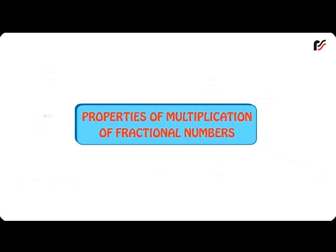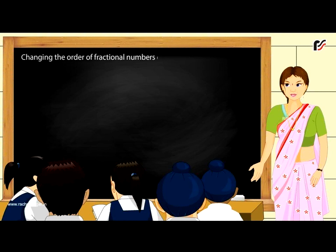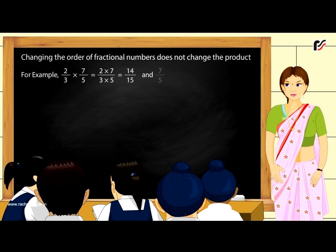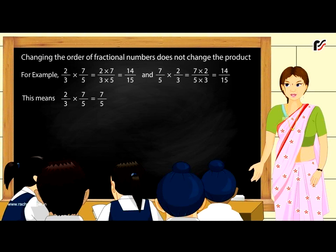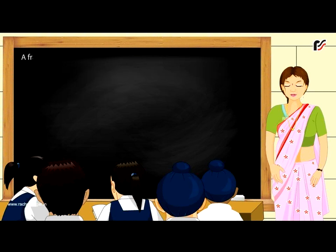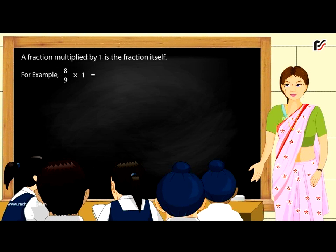Properties of multiplication of fractional numbers. Changing the order of fractional numbers does not change the product. For example, 2 by 3 multiplied by 7 by 5 equals 14 by 15, and 7 by 5 multiplied by 2 by 3 also equals 14 by 15. This means 2 by 3 multiplied by 7 by 5 equals 7 by 5 multiplied by 2 by 3. A fraction multiplied by 1 is the fraction itself. For example, 8 by 9 multiplied by 1 equals 8 by 9.